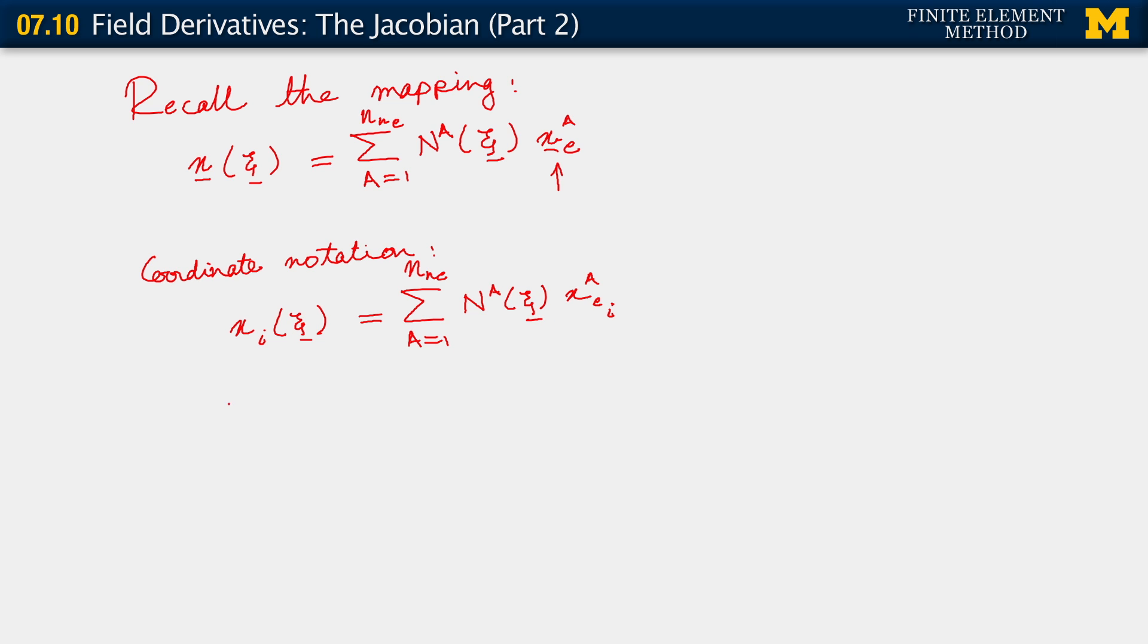Each x little i component can be parameterized by the full c vector, c1, c2, c3. And this is then just sum A going from 1 to number of nodes in the element, Na of c times x_a for element e, component i of the x vector. So this is how we compute this derivative.